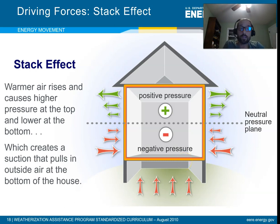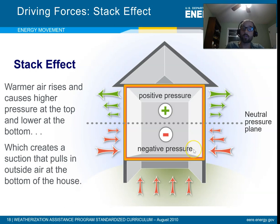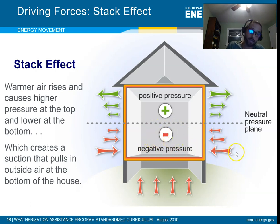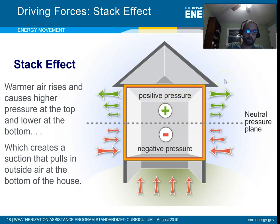Why do we care? At the top of the building, there's high pressure with respect to the outside; at the bottom, there's low pressure with respect to the outside. Air moves from higher to lower pressure areas, so the result is a negative pressure zone down low — negative with respect to outside — which pulls outside air into the bottom of the building. The opposite happens at the top, where air moves from inside to outside.